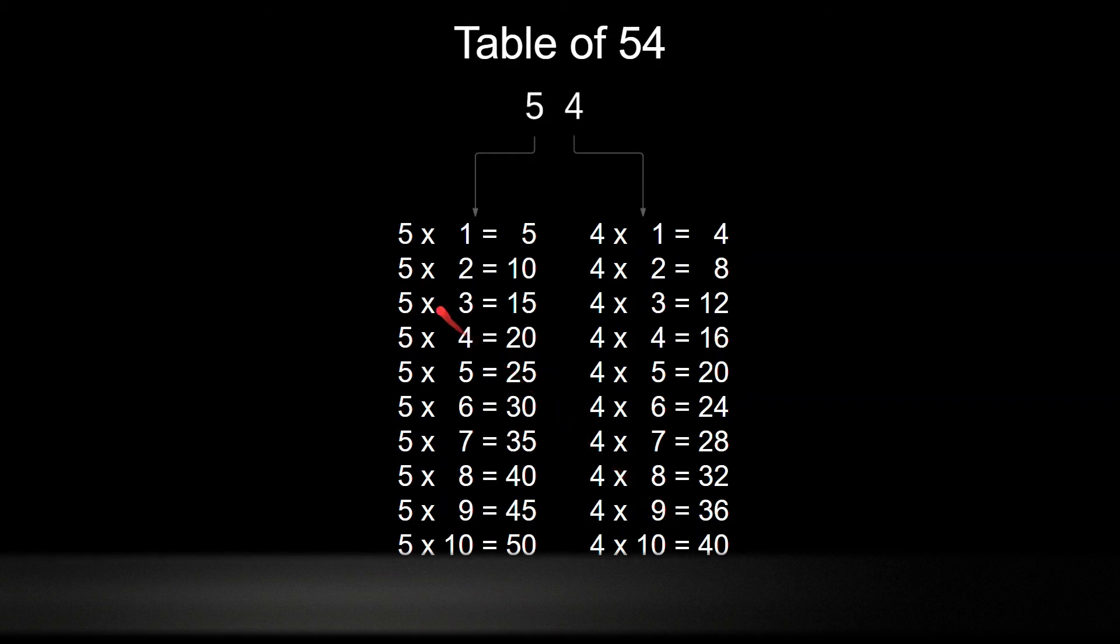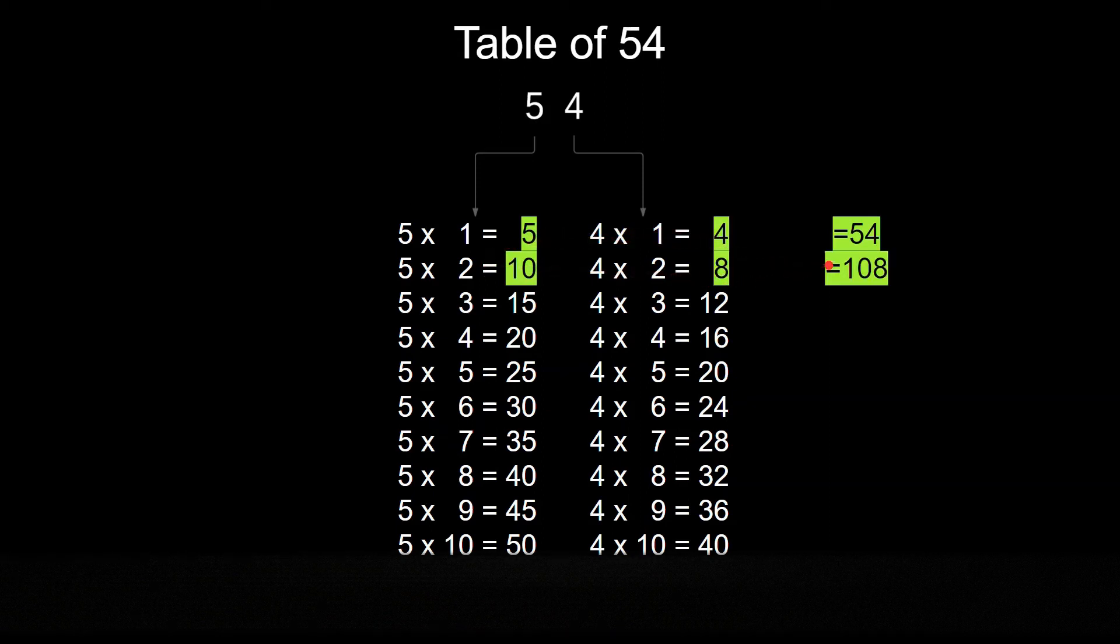Now we will write the table of 54 just like this. So 5 and 4 is 54. Then 10 and 8 is 108. Then here we will add 15 and 1. So it is 16 and 2, which is 162.